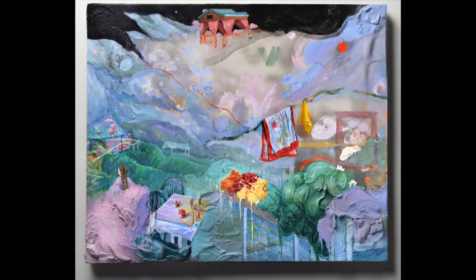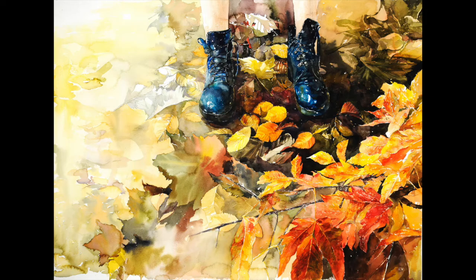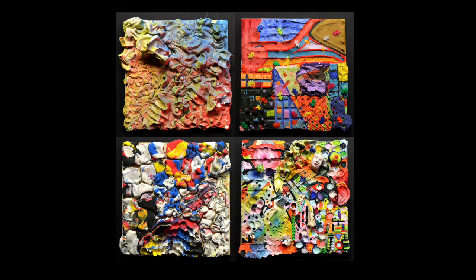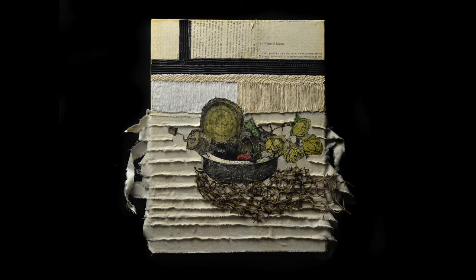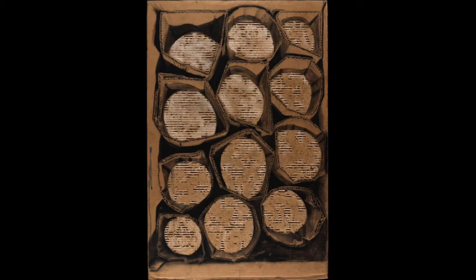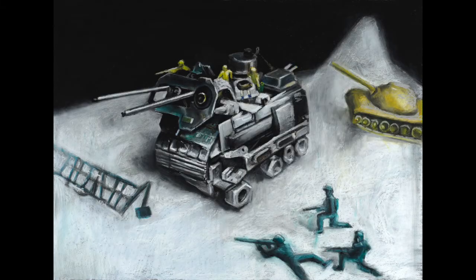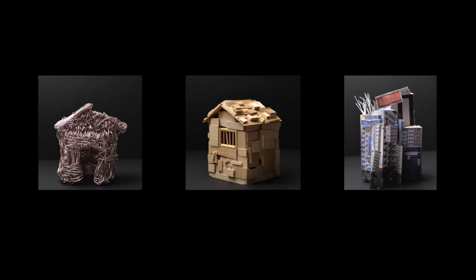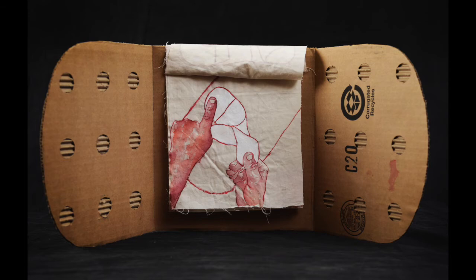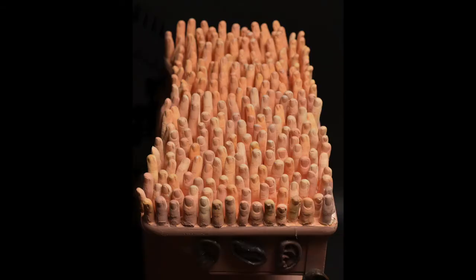Textures are described by many different adjectives. We commonly think of the adjectives rough and smooth, but there are many more. Try creating an art portfolio piece based on a more obscure adjective like abrasive, angular, bouncy, bendable, cozy, dry, flawed, furry, fuzzy, gooey, glossy — you get the idea.